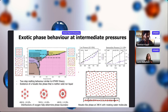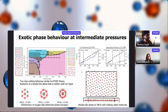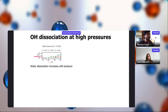At intermediate pressures, beyond room temperature we see a hexatic-like phase with relatively immobile oxygen atoms that are rotating. This is reminiscent of the high-pressure phase of hydrogen with rotating hydrogen molecules — very interesting.